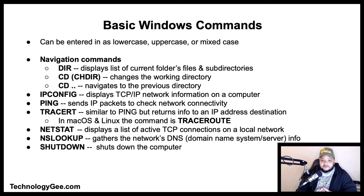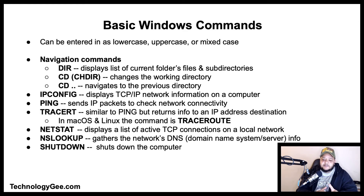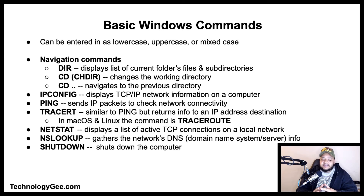The ipconfig command displays TCP/IP network information on a computer. The ping command sends IP packets to check network connectivity. The traceroute command is similar to ping but returns the path information that your ping took to an IP address destination — on Mac and Linux this command is also called traceroute. The netstat command displays a list of active TCP connections on a local network.